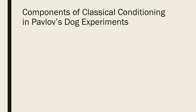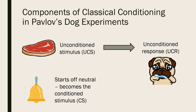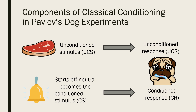In these experiments the dogs produce an automatic and reflexive saliva response when presented with food, making the food the unconditioned stimulus and the dog's saliva response the unconditioned response. Initially the bell produced no response in the dogs — it was a neutral stimulus. However, over time and by being paired with the food, the dogs started to produce saliva at the sound of the bell. Thus the bell becomes the conditioned stimulus and the dogs salivating at the sound of the bell is the conditioned response.